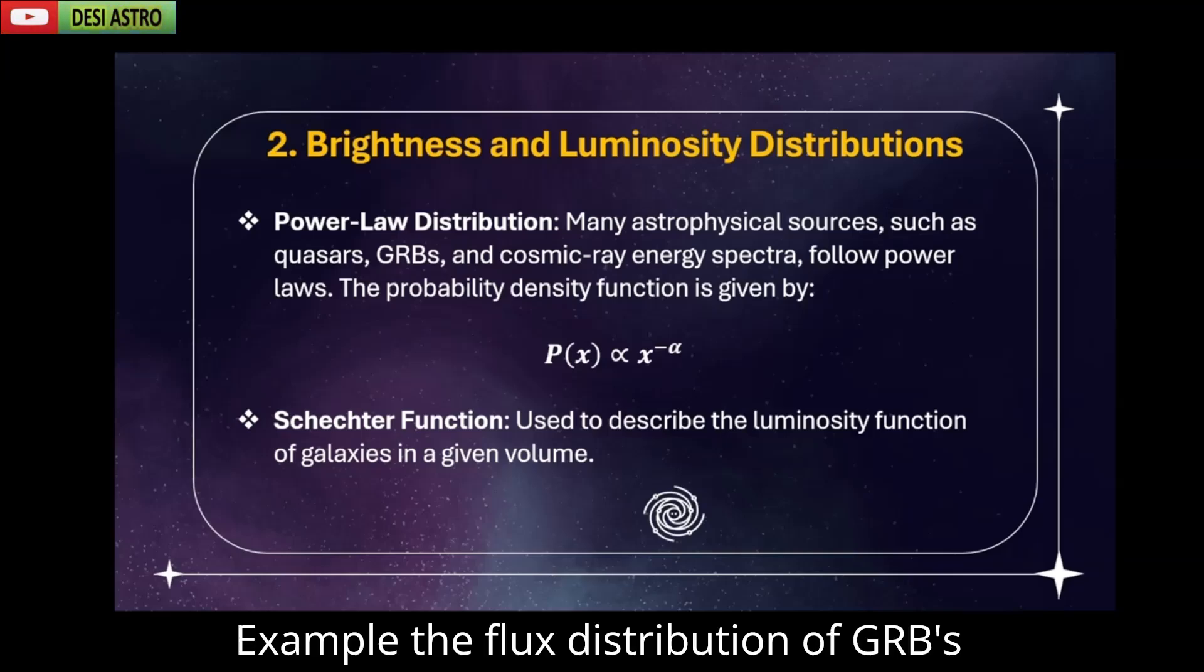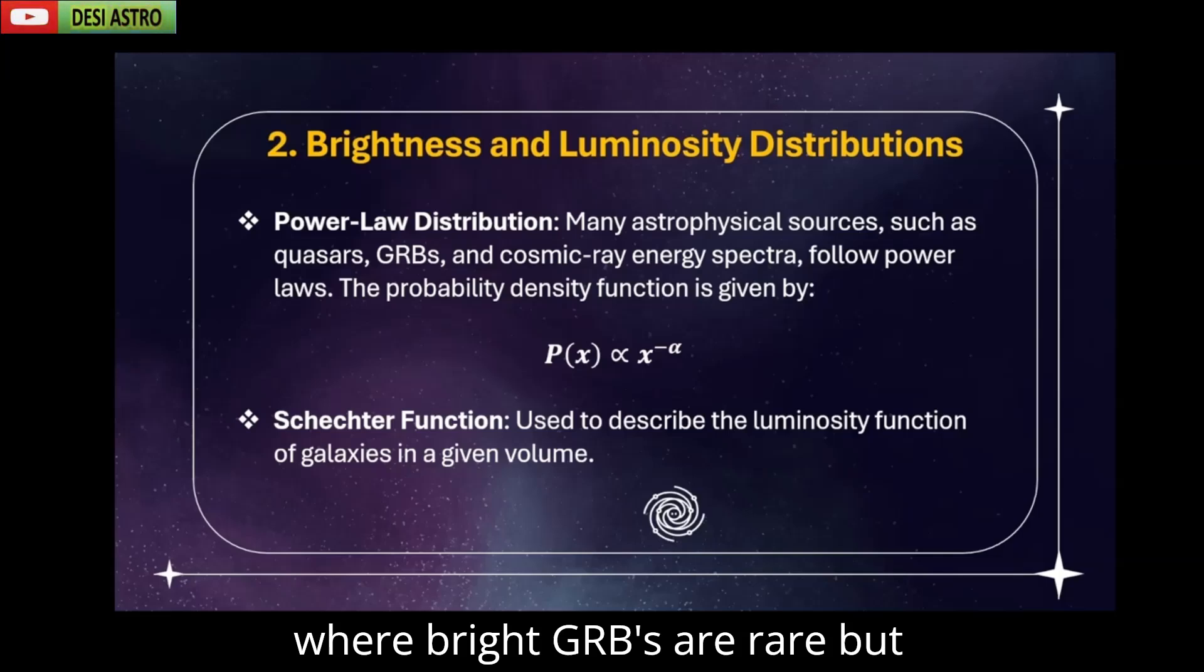For example, the flux distribution of GRBs where bright GRBs are rare but faint ones are common. They follow the power law distribution.